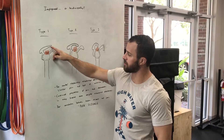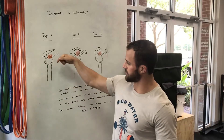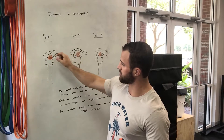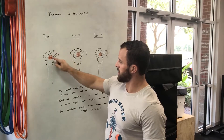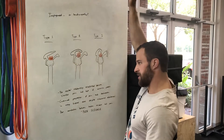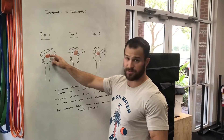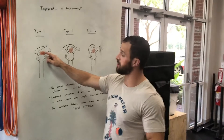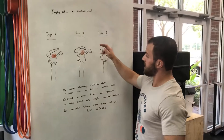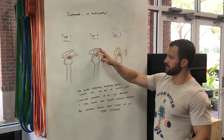The most common type of shoulder impingement discussed is the type in which your supraspinatus tendon — one of your rotator cuff muscles that runs right here — bumps up against a ligament called the coracoacromial ligament.